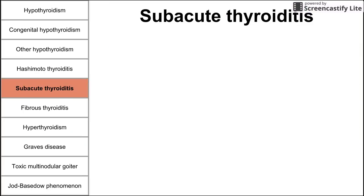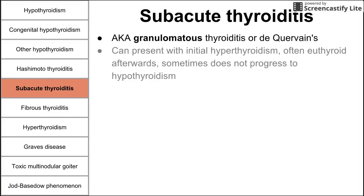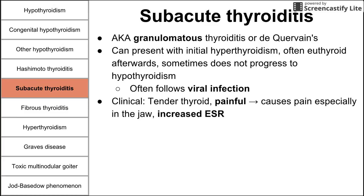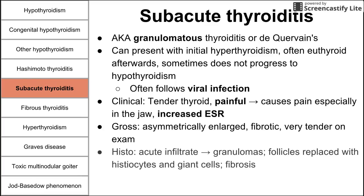Next is subacute thyroiditis, also called granulomatous thyroiditis or De Quervain's thyroiditis. It can present with initial hyperthyroidism, but unlike Hashimoto's, it usually does not dip into hypothyroidism — it typically returns to euthyroid after the initial hyperthyroid spike. This disease often follows a viral infection. Clinically, the thyroid is painful and very tender, with pain radiating to the jaw, and erythrocyte sedimentation rate is elevated.